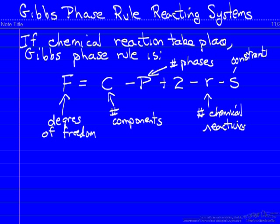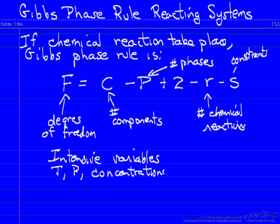So the idea is we put in these numbers and we can then determine how many intensive variables. So we are only talking about intensive variables with the Gibbs phase rule. We don't determine the amounts, but instead temperature, pressure, concentrations, or mole fractions are the intensive variables we are talking about.